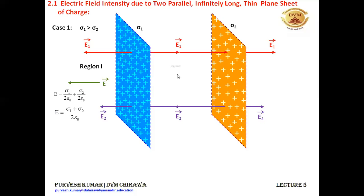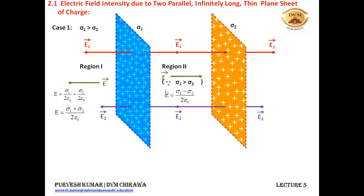In region 2, E1 is acting towards the right of the blue colored sheet and E2 is acting towards the left of the orange colored sheet. Since E1 is greater than E2 and they act in opposite directions, the net electric field is in the direction of E1 and its magnitude is obtained by subtracting: it will be (sigma 1 minus sigma 2) upon 2 epsilon naught.